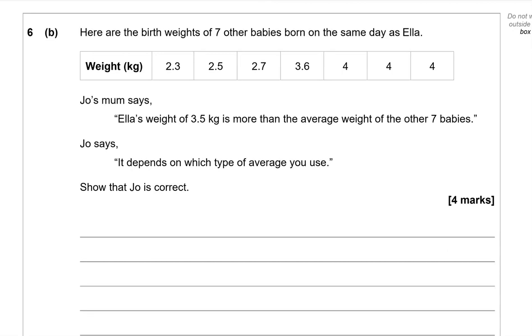Here are the birth weights of 7 other babies born on the same day as Ella. Joe's mum says, Ella's weight of 3.5 kg is more than the average weight of the other 7 babies. Joe says, it depends on which type of average you use. Show that Joe is correct. The main averages that we use in everyday life are mean and median. So, let's just compare those two. Let's work out the mean and the median of these weights.